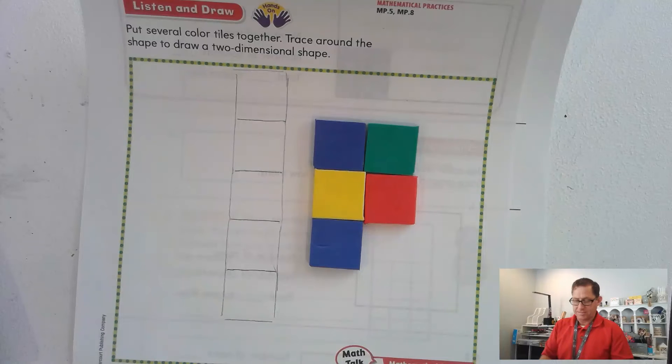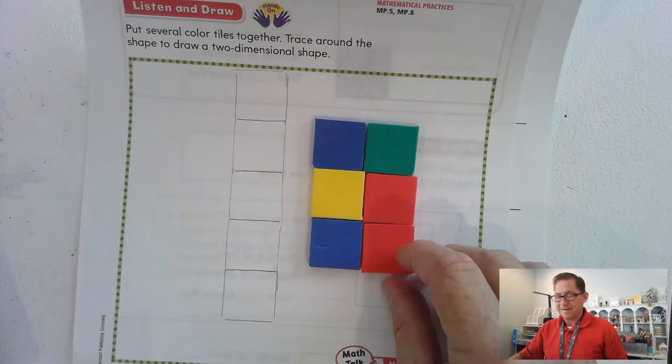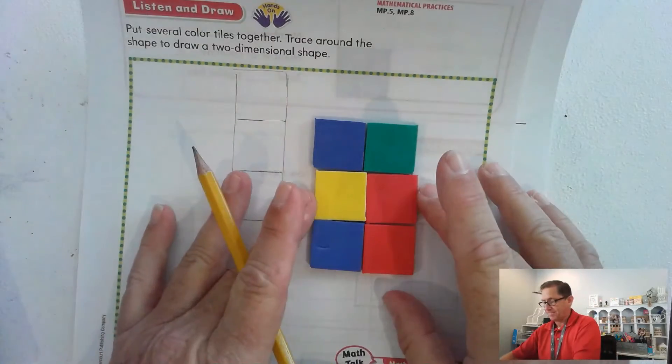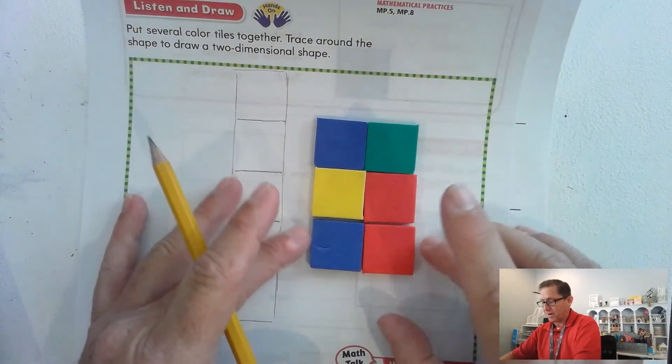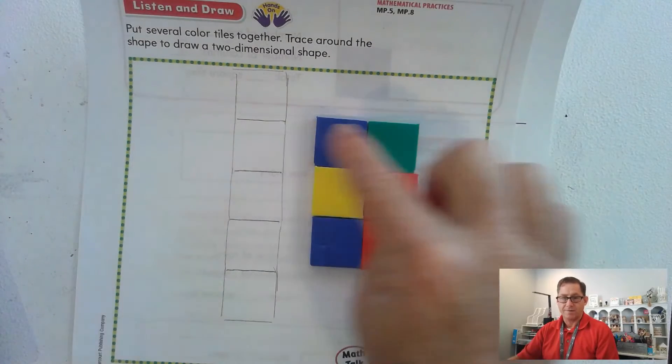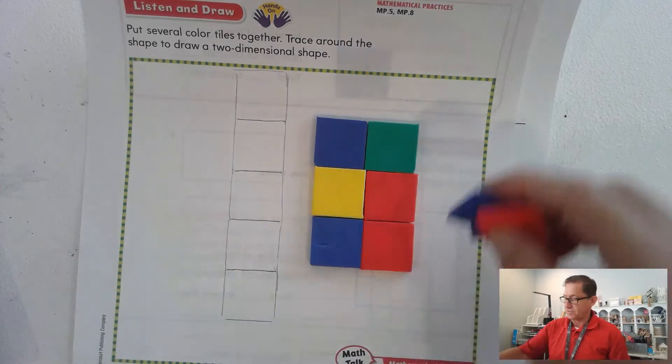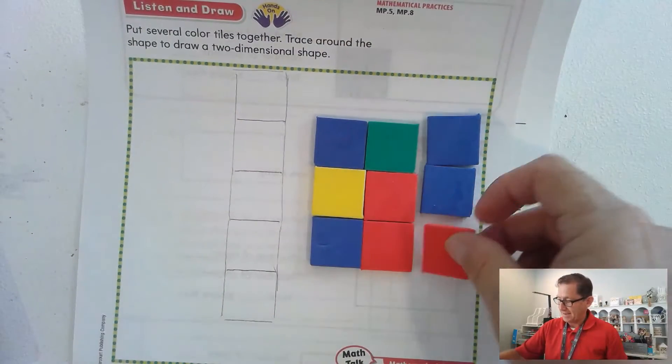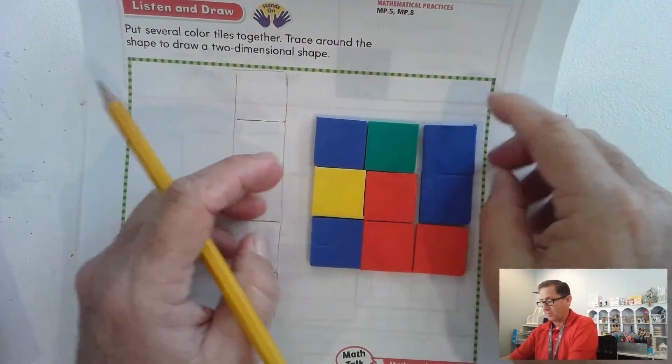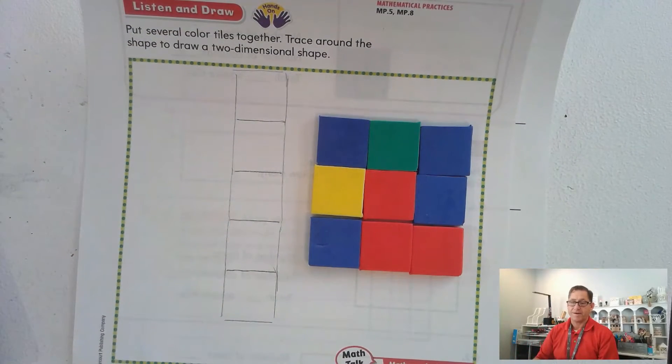What if I took a sixth tile? Now it looks like it's even, right? But this is not a square, right? This is three rows of two. So what would I have to do to make it into a square? I'd have to add another column of three. So I'd have to have three rows of three.